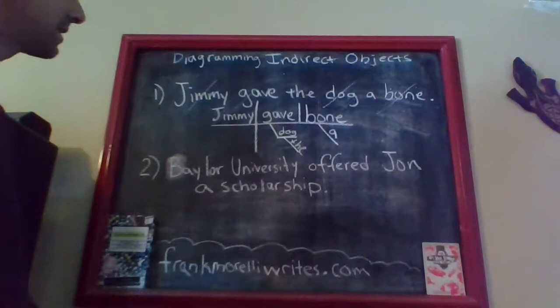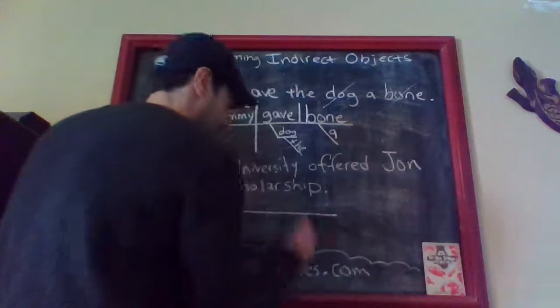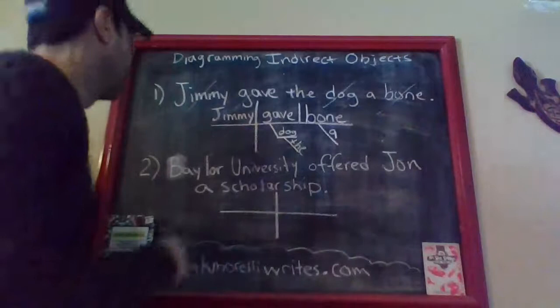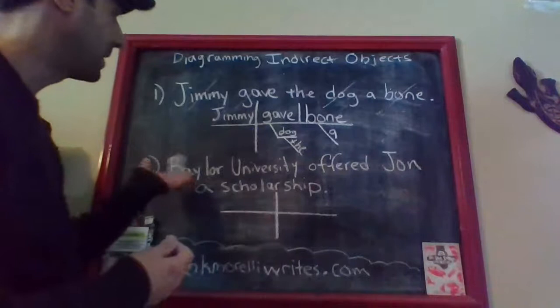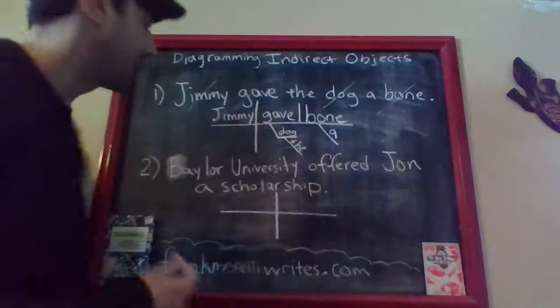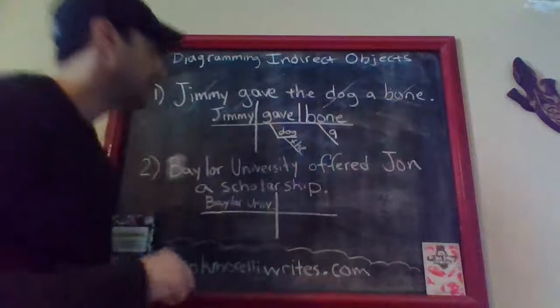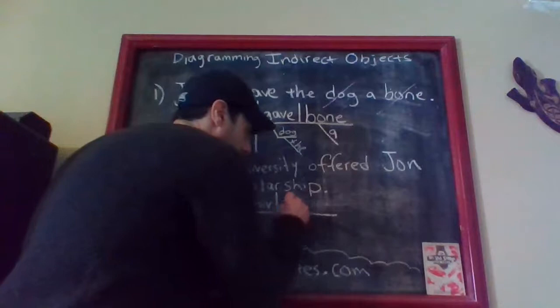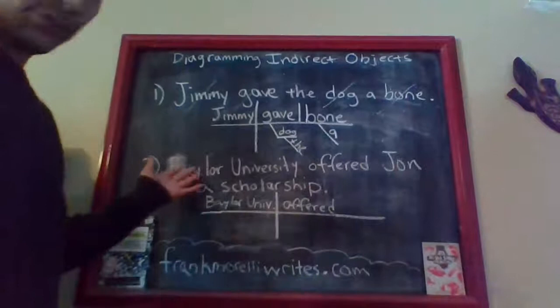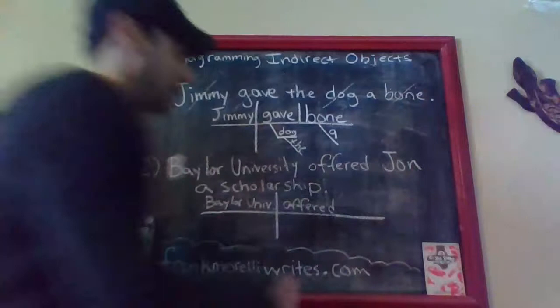Our sentence is: 'Baylor University offered John a scholarship.' First we draw our chart. We need to find the subject — who or what is the sentence about? Baylor University is the entity doing the offering, so the whole name 'Baylor University' is the simple subject. Then we look for the verb showing action — that's the word 'offered.' Now we ask: Baylor University offered what?